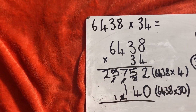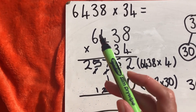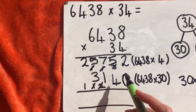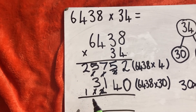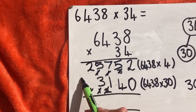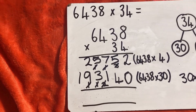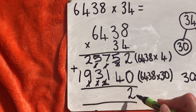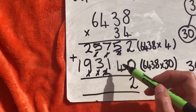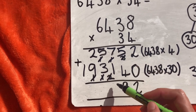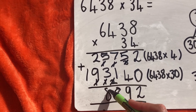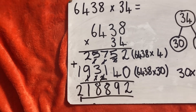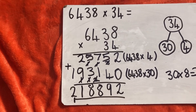3 tens times 3 tens is 9, plus the 2 carried is 11. For 30 times 400, it's easier to say 3 times 4 is 12 plus 1 is 13. It's really important to make sure my columns stay lined up. Then 3 times 6 is 18 plus 1 is 19. Now I'm ready to do my final stage: add up my two rows. 2 plus 0 is 2; 5 plus 4 is 9; 7 plus 1 is 8; 5 plus 3 is 8; 2 plus 9 is 11, carry the 1, then 2. So my product is 218,892.